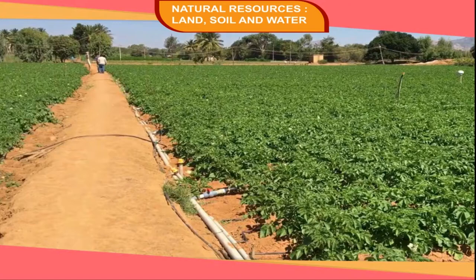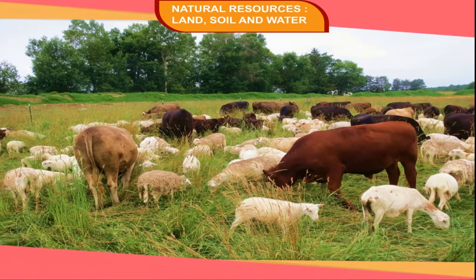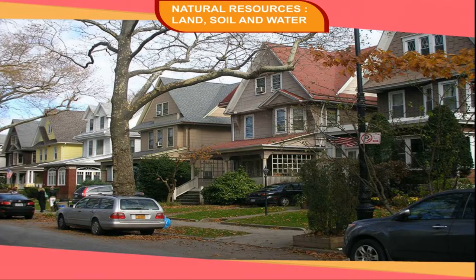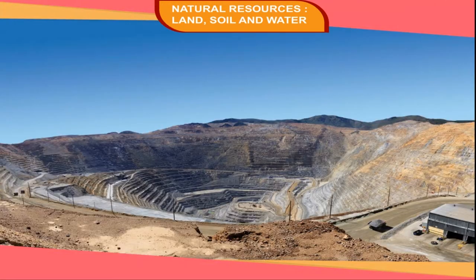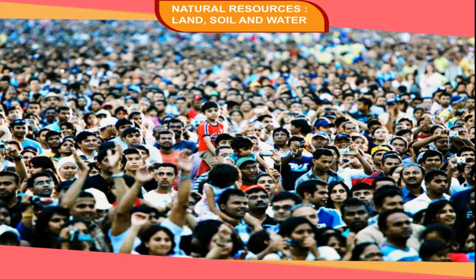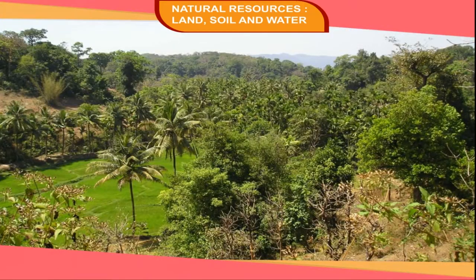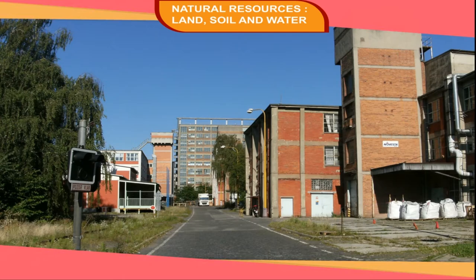Land is used for different purposes such as cultivation of crops, grazing of animals, building houses and roads, mining, etc. This is called the land use pattern. The ever-growing population is responsible for changes in land use pattern. It has led to conversion of forested areas into croplands, and croplands into non-agricultural uses such as roads and buildings.